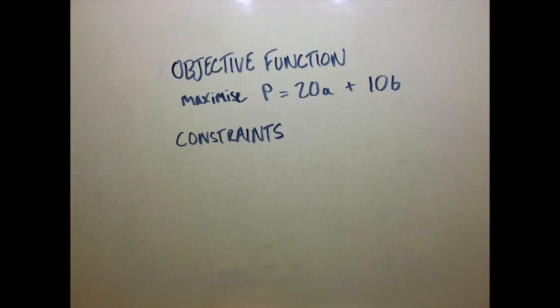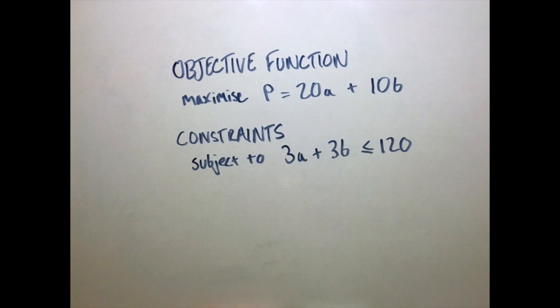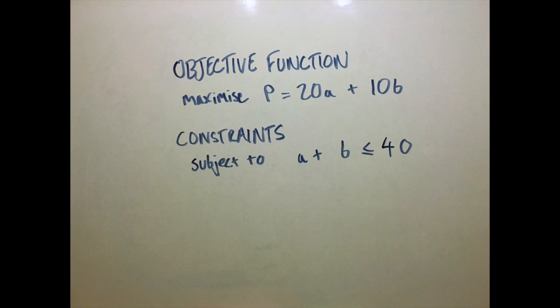We also know that each chair requires 3m² of wood and we only have 120m² of wood each week to work with, so this gives us 3A + 3B ≤ 120, but we can simplify this to A + B ≤ 40.